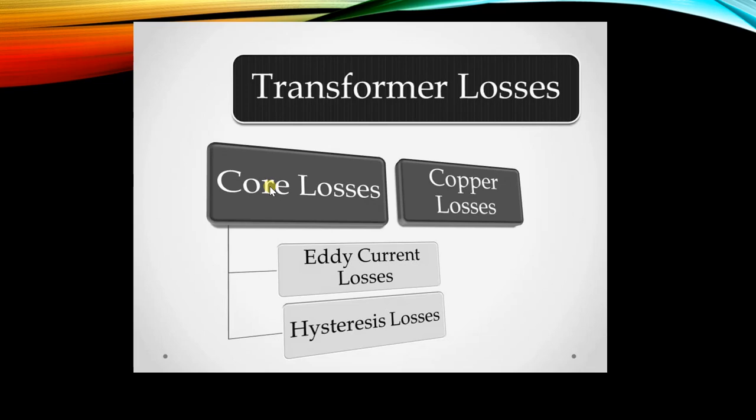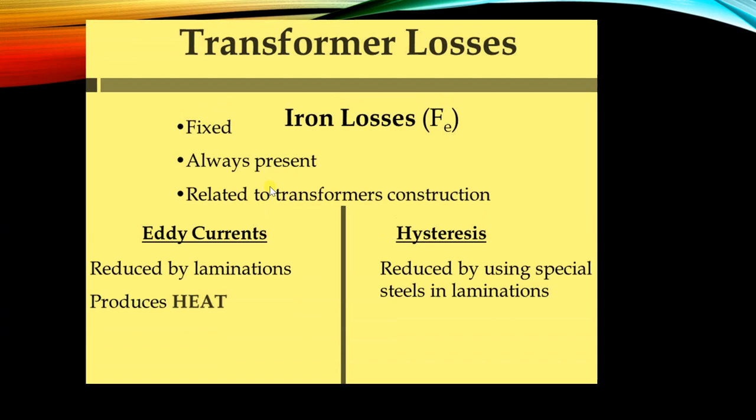Transformer losses are mainly of two types: core losses and copper losses. Core losses are further divided into eddy current losses and hysteresis losses. Eddy current losses are fixed, always present, and related to transformer construction; they are reduced by lamination but produce more heat. Hysteresis losses are reduced by using special steel in the lamination, though this increases the cost of the transformer.